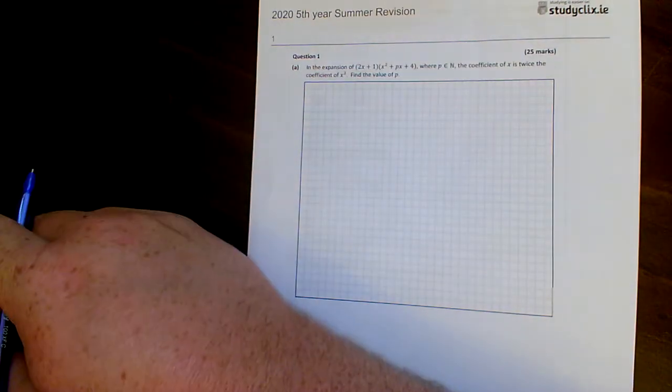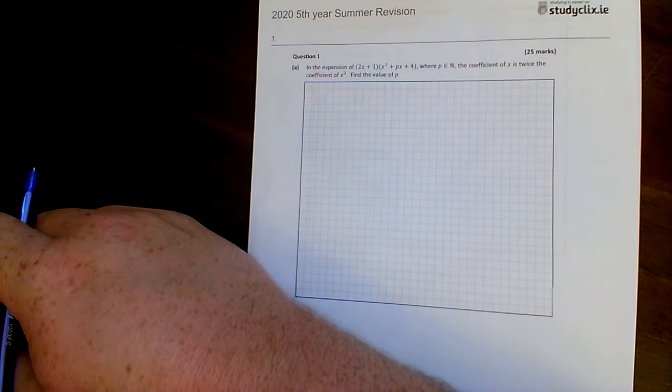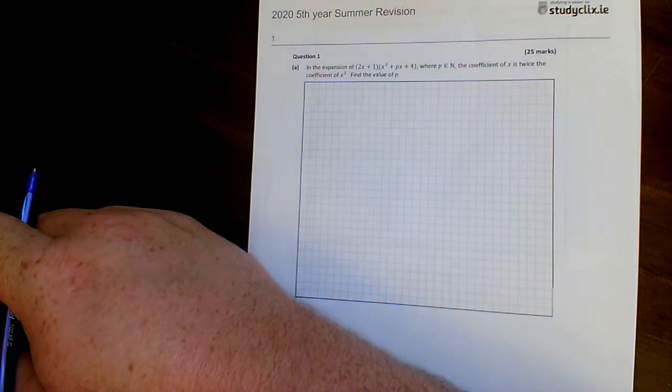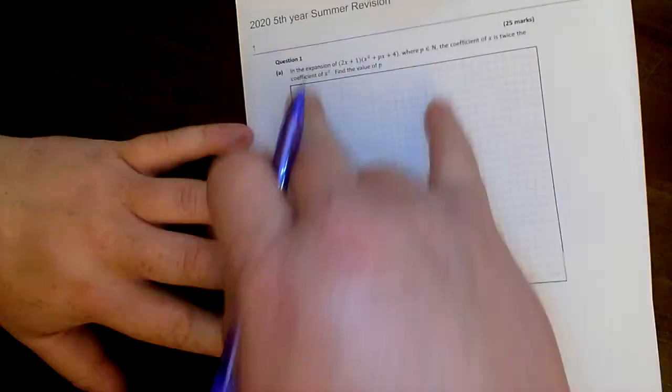First question here. In the expansion of that where p is known to have been, the coefficient of the x is twice the coefficient of the x squared. Find the value of p. The first thing you have to do now is multiply out your two sets of brackets. That's the very first thing.